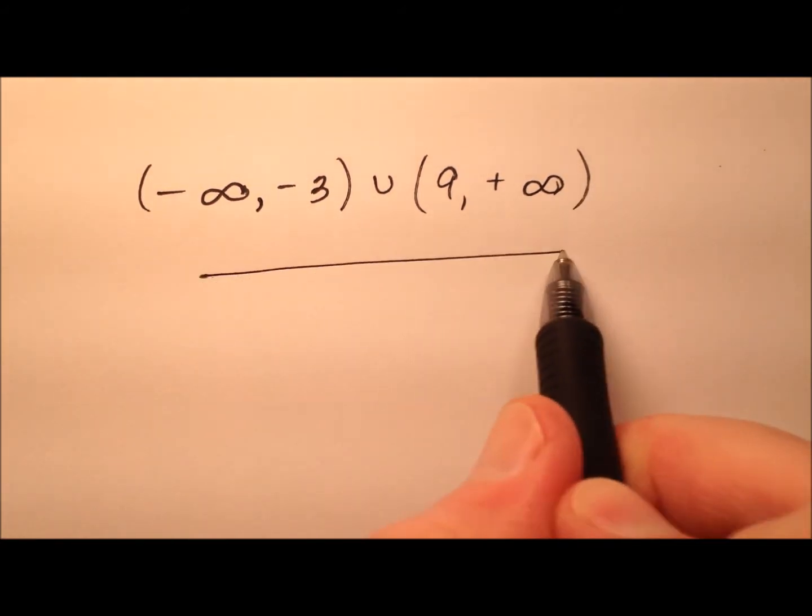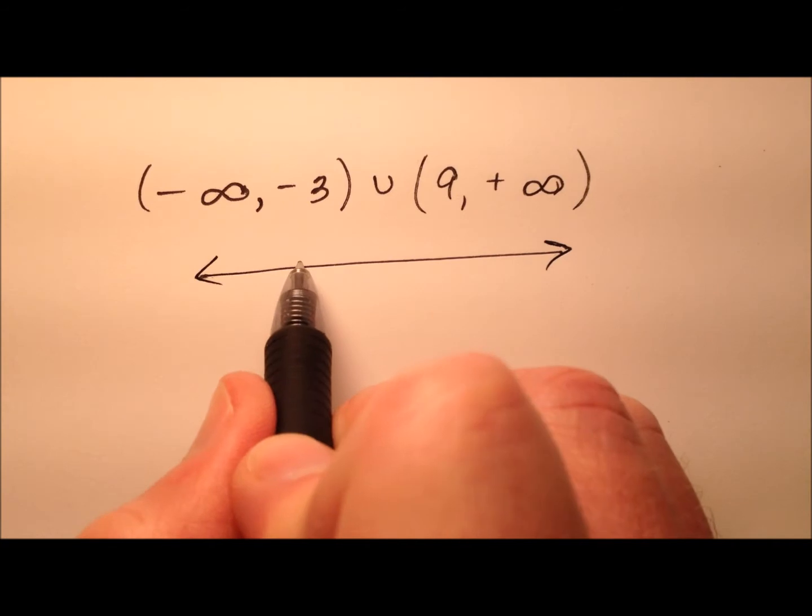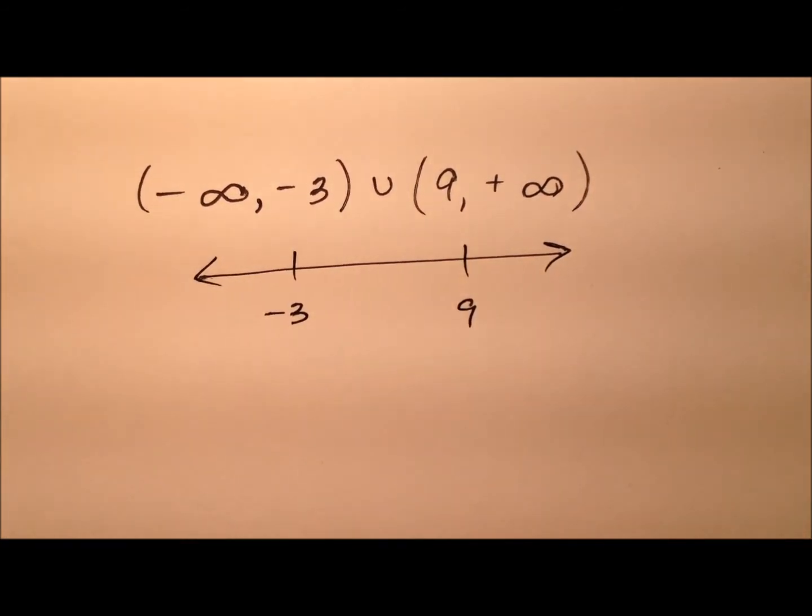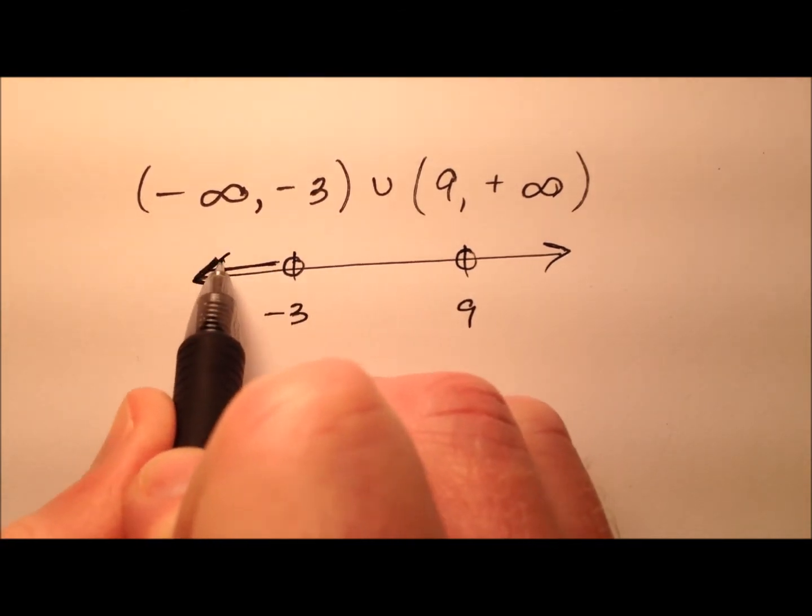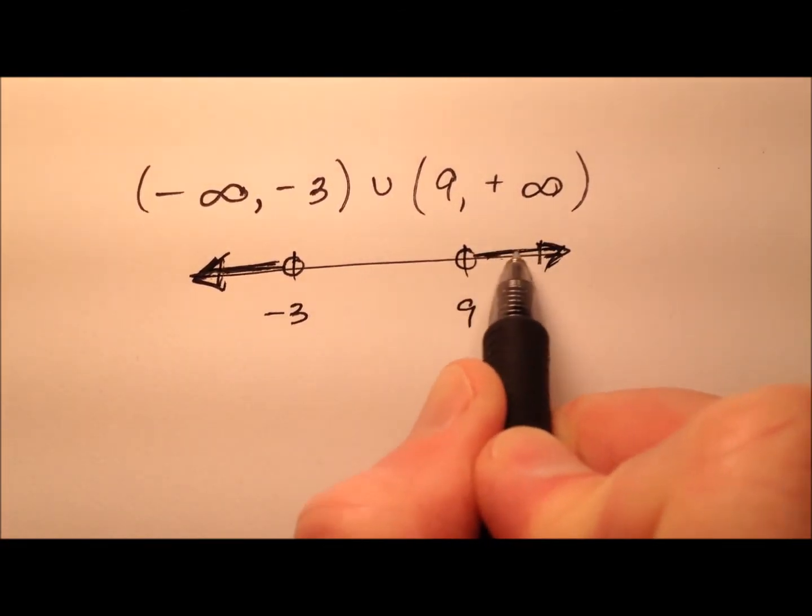So what we could do is get an idea of what this looks like by graphing, so negative 3 and positive 9. Let me open circles, and this one will be going to the left, and this one will be going to the right.